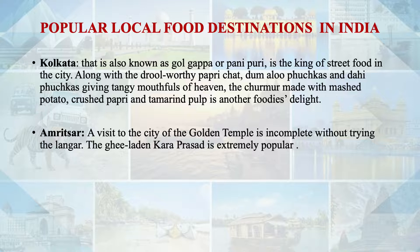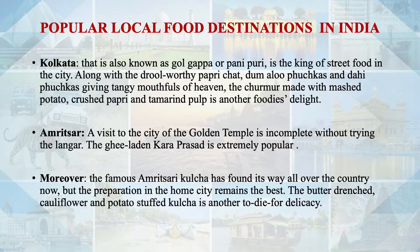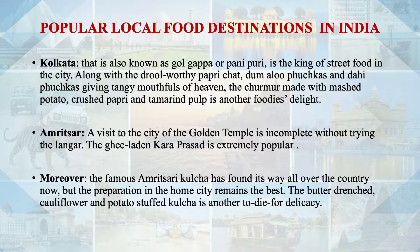Whenever you get a chance to visit Amritsar, the holy city of the Golden Temple, you must try the Kala Prasad which is distributed at the langar in the temple. It is extremely popular among tourists. Moreover, the famous Amritsari Kulcha is also liked by tourists. Globally, tourists visit Harmandir Sahib and there are many variations of stuffed Kulcha in the city.